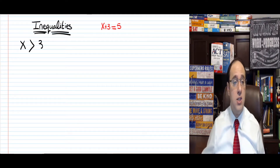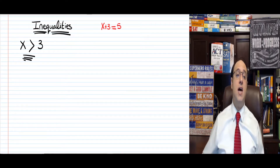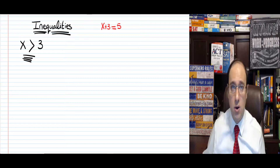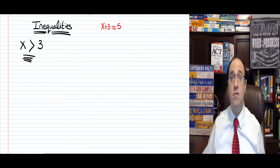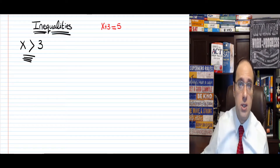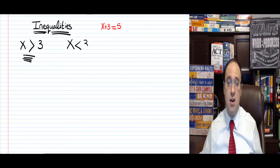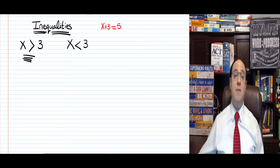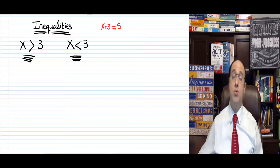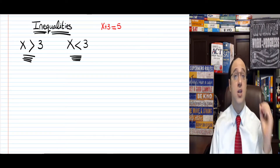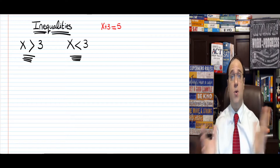So x is greater than 3 means that x does not equal 3 — x is greater than 3, like 4 or 5 or 6. If we say x is less than 3, that means x does not equal 3 — it is less than 3, like 2, 1, 0, or negative 1.